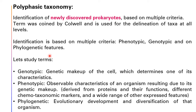Identification is based on multiple criteria: phenotype, genotype, and phylogenetic features. Genotypic refers to the genetic makeup of a cell, which determines its characters. Phenotypic characters are the observable characters of a microorganism resulting from its genetic makeup, derived from proteins, their functions, chemotaxonomic markers, and other expressed features. Phylogenetic approach studies the evolutionary development and diversification of that particular microorganism.